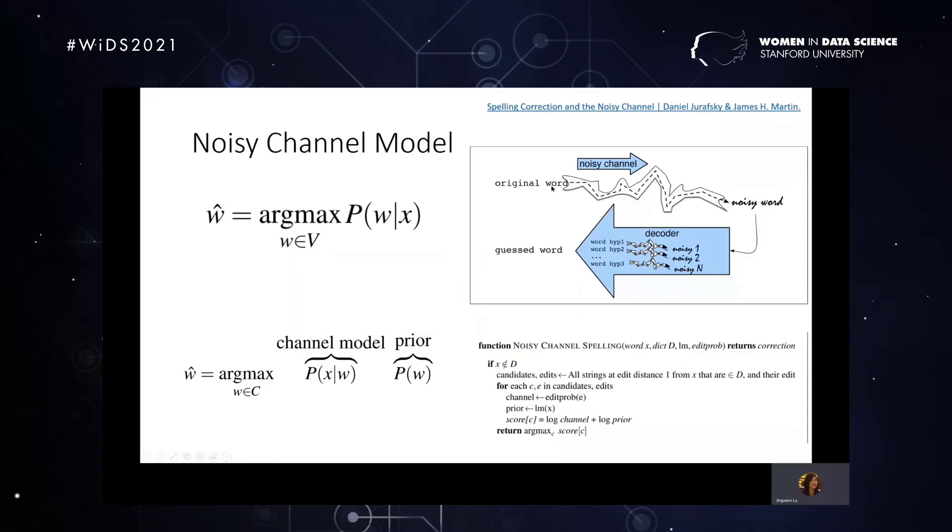So for the whole noisy channel model, we can sum it up in these steps. So the goal is to return the corrections. And the function is that you have a noisy channel spelling coming in. There's a word X, that's the original word. And we have a dictionary, have all those possible words. And we have a language model. We have an edit distance, edit probability. Then we return the correction. So basically, in the candidates part is that for all the strings at edit distance 1 from X that are belonging to the dictionary D. And for each of them, we need to have the channel model to give us the edit probability. And we also have the language model to give us the prior. And the scoring basically can be further simplified to just have the log probability of the edit, which is the channel, plus the log of the prior, the language model. And then we try to find the highest one.